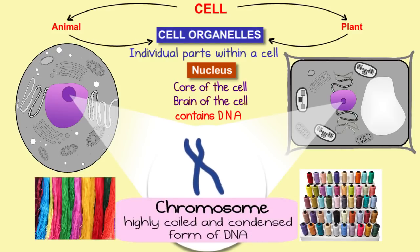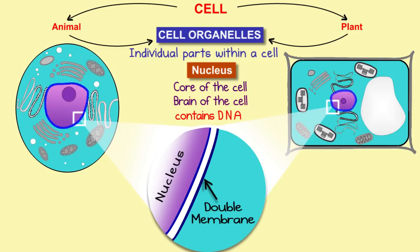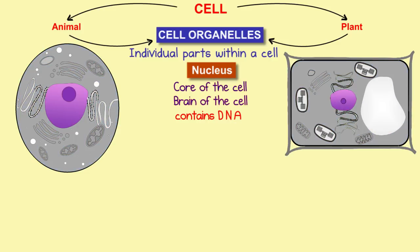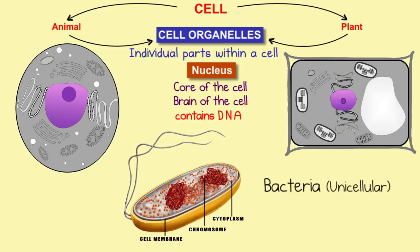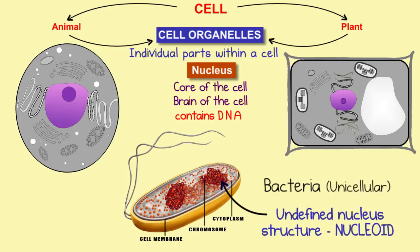All these contents are fit into a nucleus by a double covering or membrane around the nucleus. Since it is present around the nucleus, it is called as a nuclear membrane. It can be inner nuclear membrane and outer nuclear membrane. A quick fact: some organisms like bacteria lack this nuclear membrane, and the contents of the nucleus are therefore scattered and not bound together. Thus the nucleus won't have a definite shape, and such a type of undefined nucleus structure is called as a nucleoid.